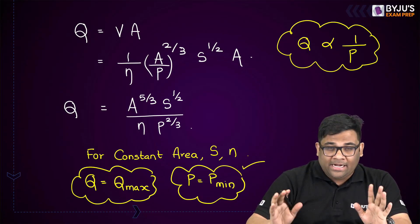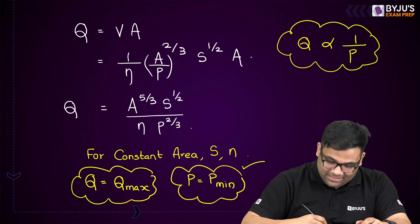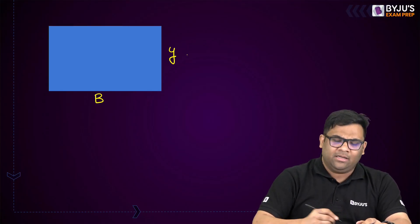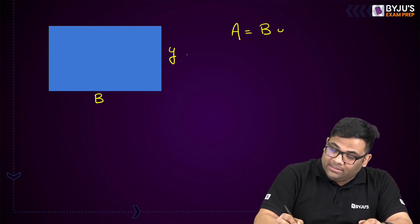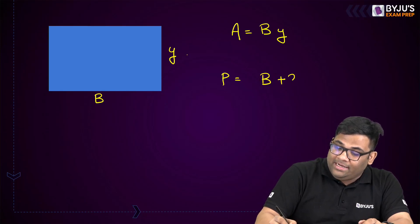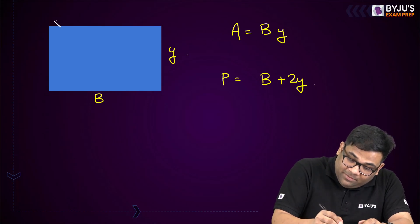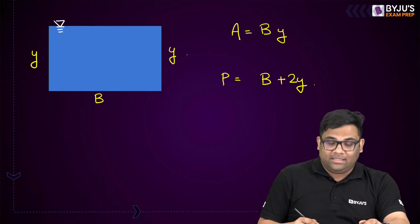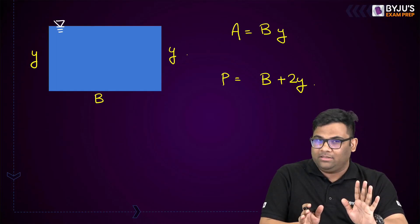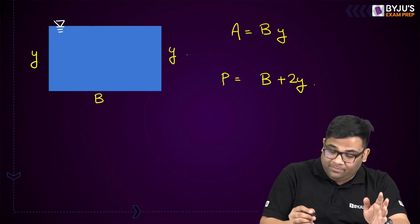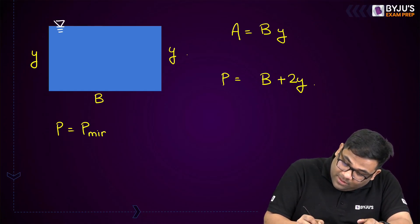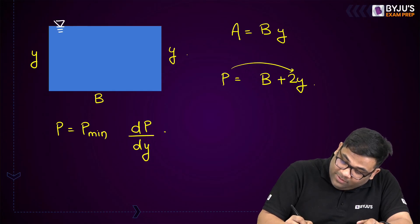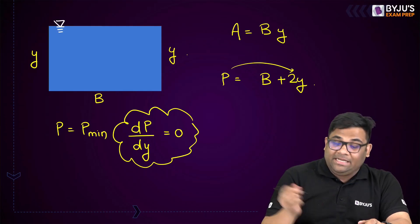Let us apply this concept of hydraulic efficient section to a rectangular cross section. In the rectangular cross section, there are two dimensions: the width b and the depth of flow y. The area is b × y, and the wetted perimeter is b + 2y. We don't consider the top surface because it is in contact with the atmosphere, not the channel. To minimize the perimeter, dp/dy = 0.